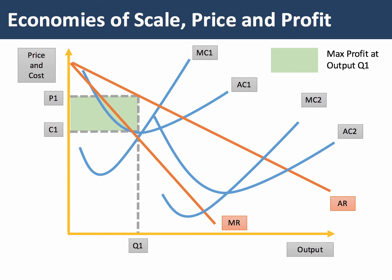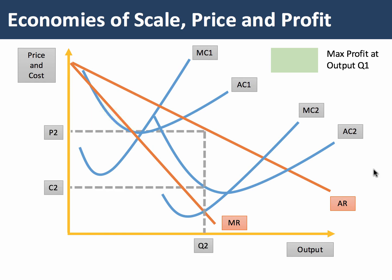Again we're going to assume profit maximisation, so they will find an output Q2 and they can now charge price P2 using the same demand curve — we're going to assume the demand conditions remain the same. The unit cost is now C2, much lower than before, and the firm is going to make a significantly higher level of profit equal to the yellow area.